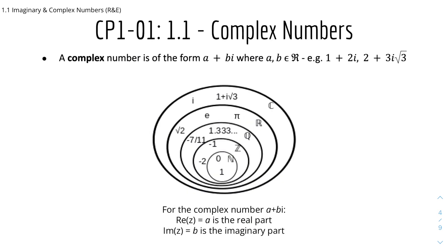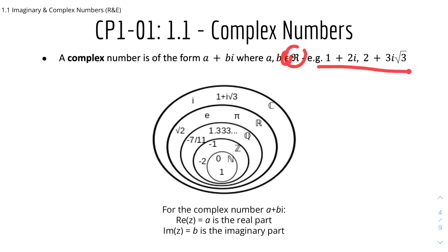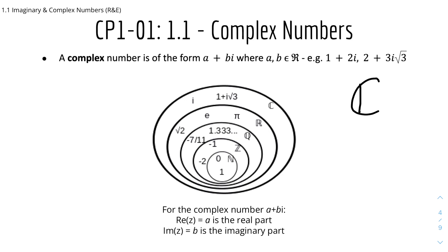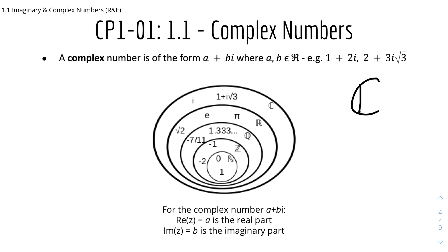Now we'll look into complex numbers. As mentioned, a complex number is of the form a plus bi, where a and b are real numbers — this denotes a set of real numbers. Here you have a set theory of all the numbers: C stands for complex numbers, and the symbol for complex numbers is a double-struck C. For the complex number a plus bi, a is the real part and b is the imaginary part.